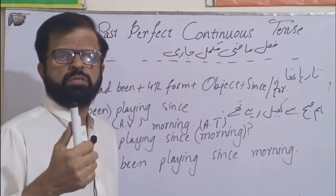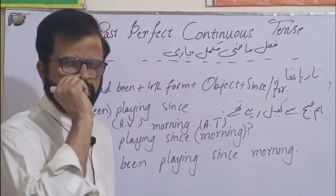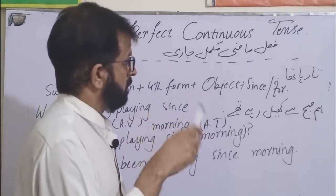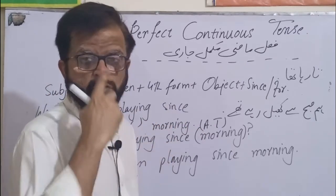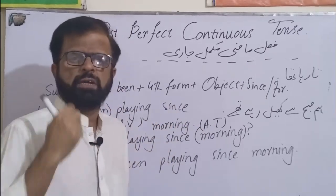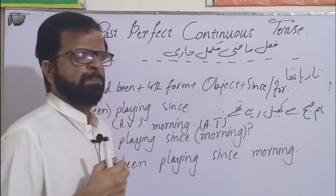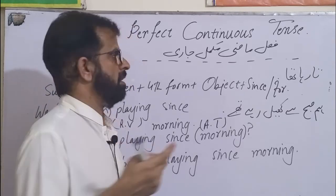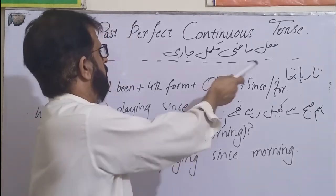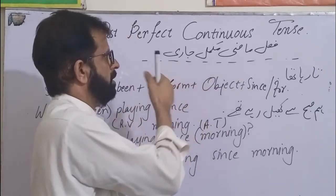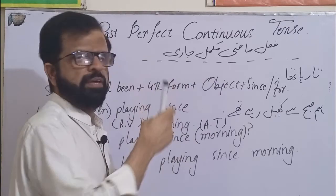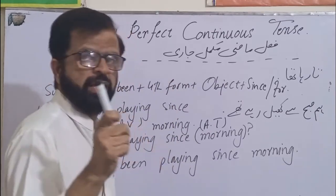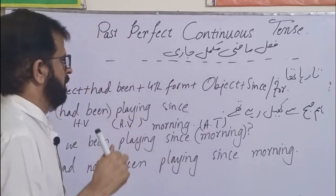ماضی میں شروع ہوتا ہے اور ماضی میں ہی جاری رہتا ہے، اس کو فعل ماضی استمراری بھی کہتے ہیں۔ لیکن عام طور پر اس کا نام ہے فعل ماضی مکمل جاری — یعنی کہ مکمل بھی ہے اور جاری بھی ہے، لیکن ہے ماضی میں۔